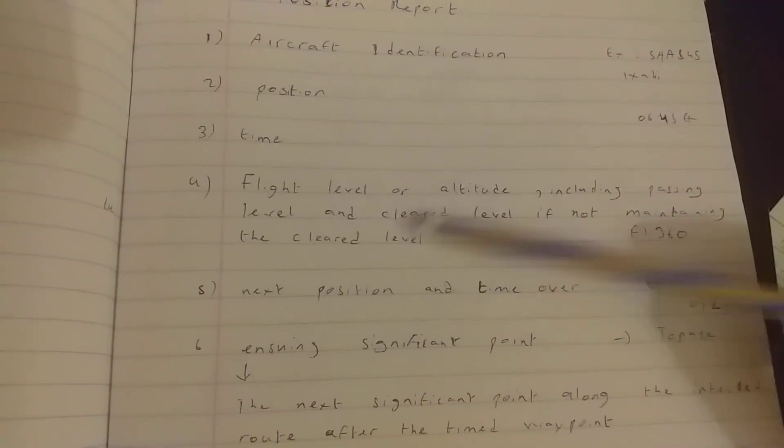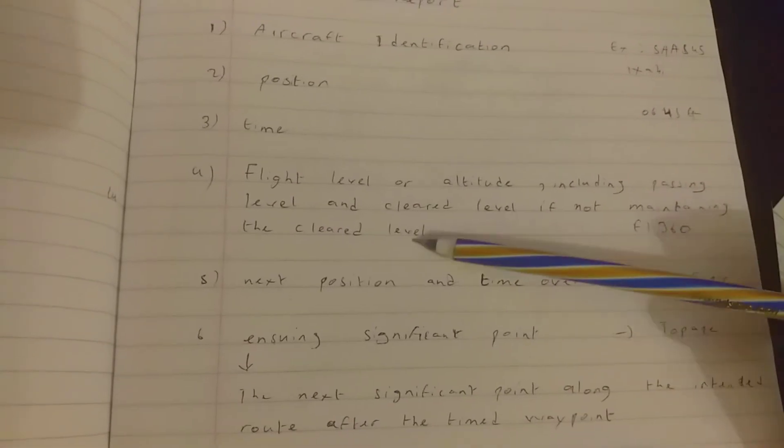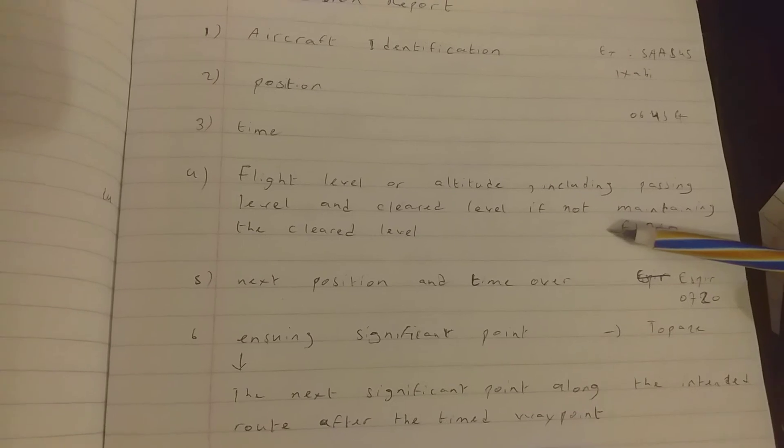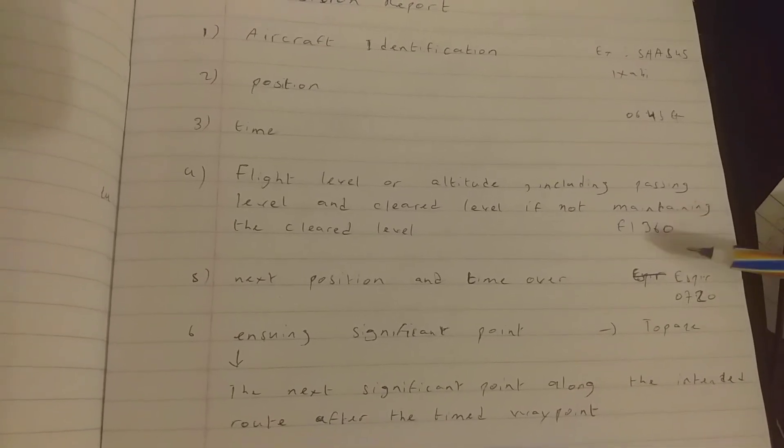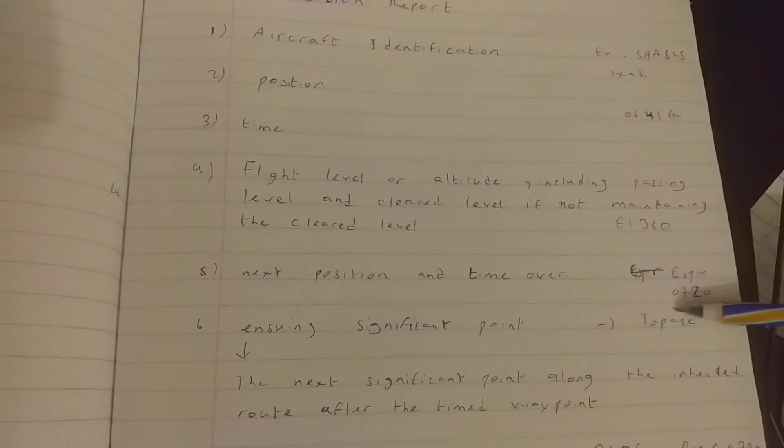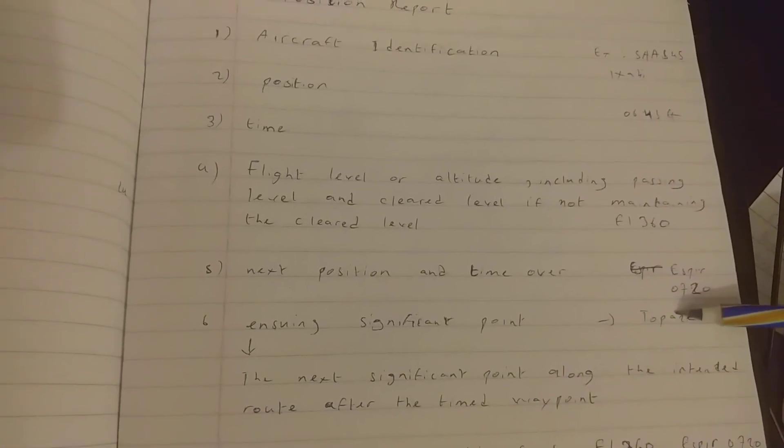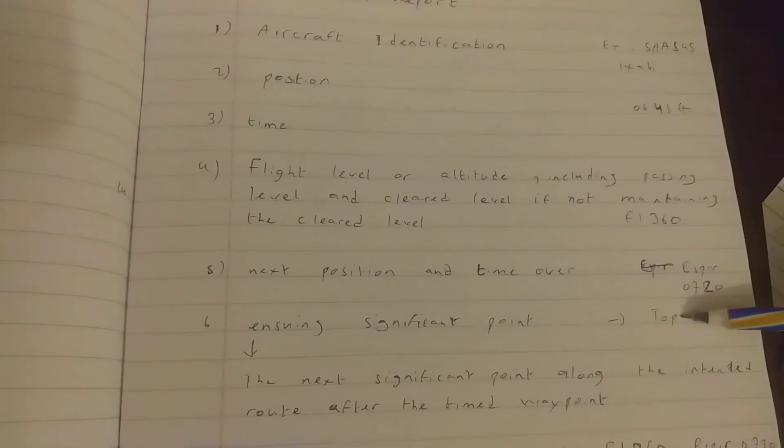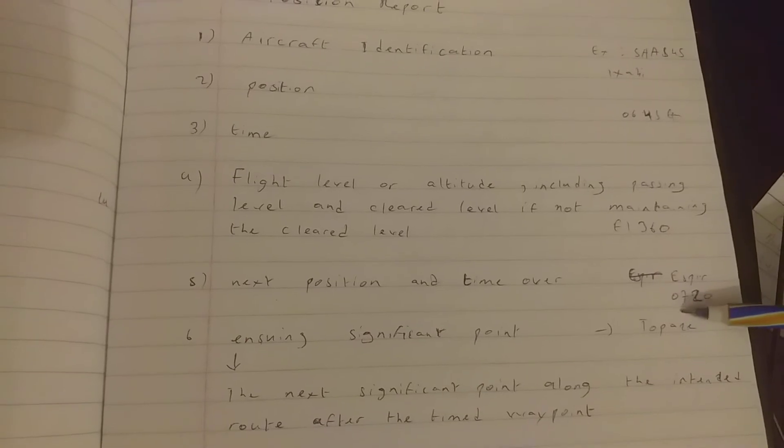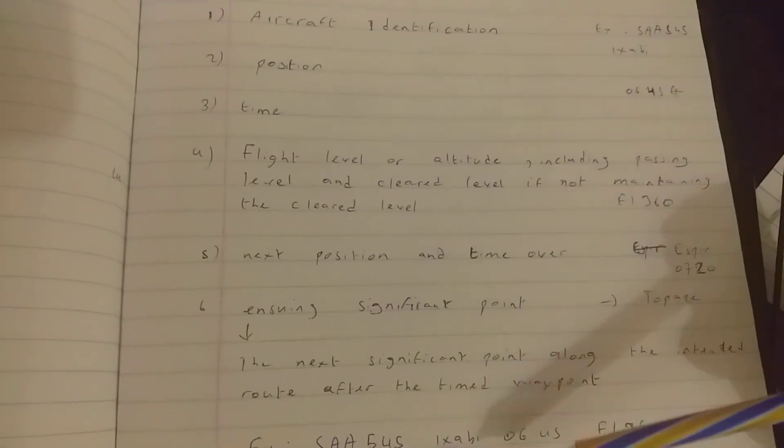So for this one, we will be taking he will be maintaining a flight level of 360. And the next position would be Spear, and the time over will be the estimated time for Spear would be 0720. And the ensuing significant point will be to pass.